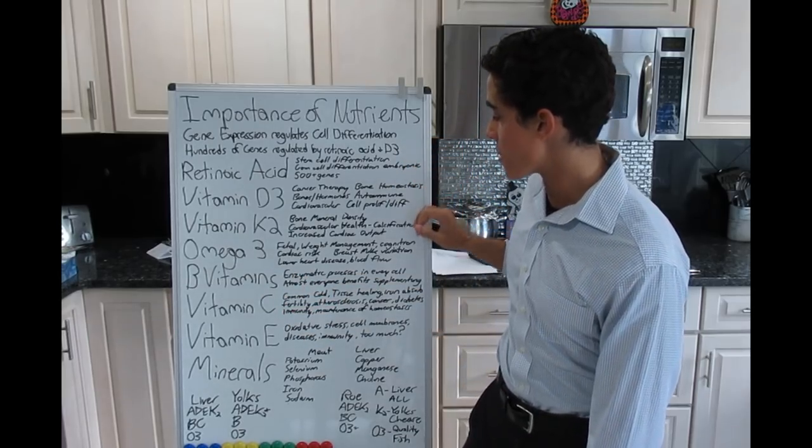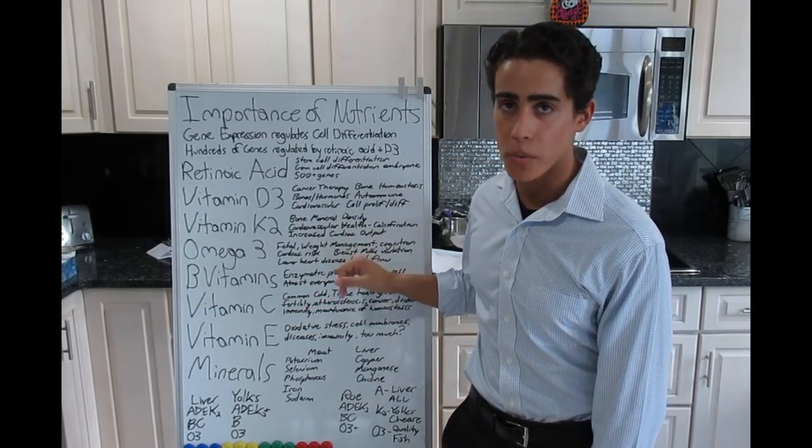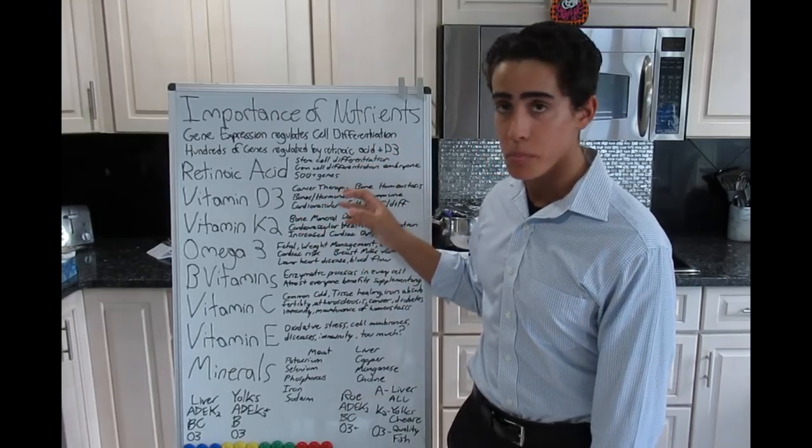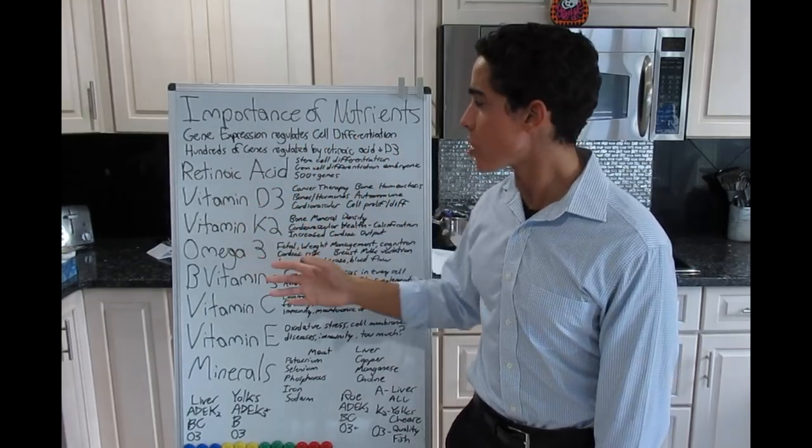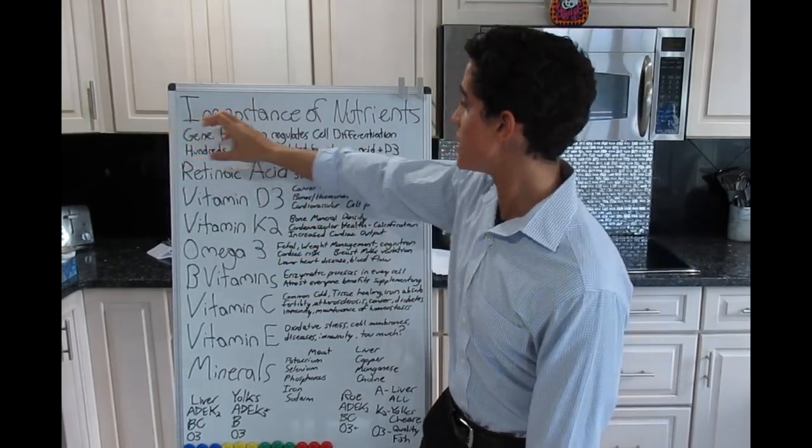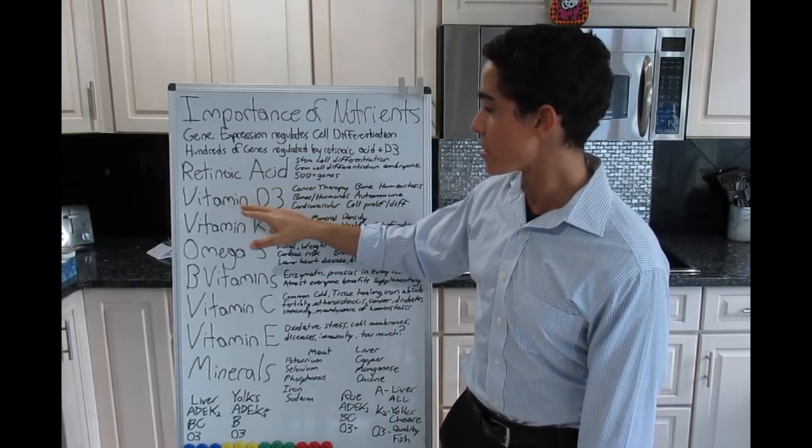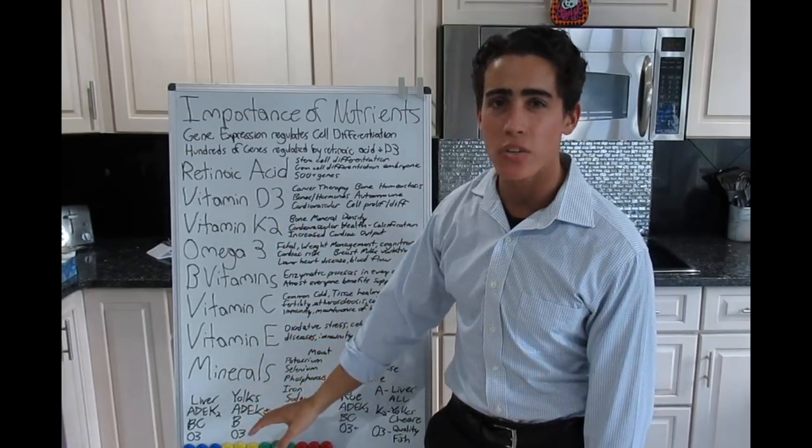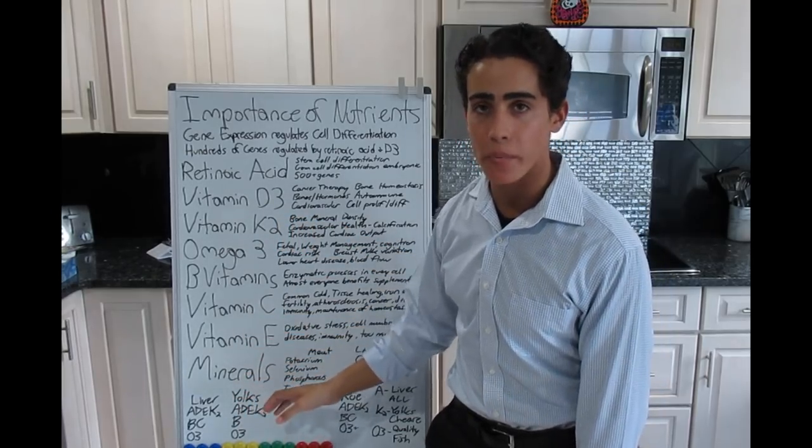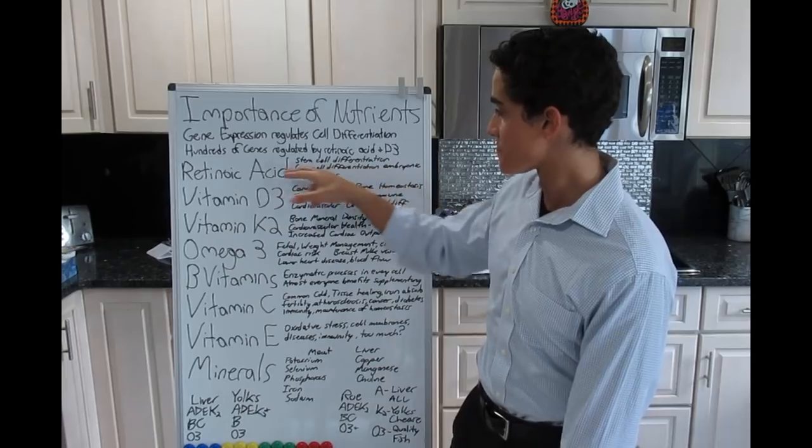Every bullet point I have here has a study that I linked in the description. I apologize if I'm going to be brief, but my goal is to just, you guys have to understand this whole idea. Every cell metabolism in the body, retinoic acid, vitamin D3, and then I just want to let you guys know how to actually get these vitamins and an easy way to do it.